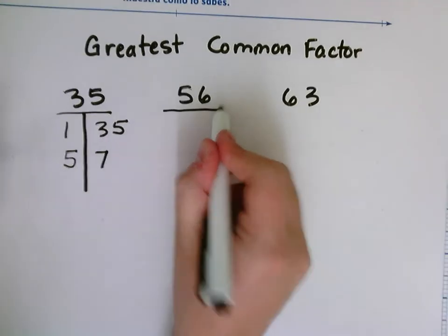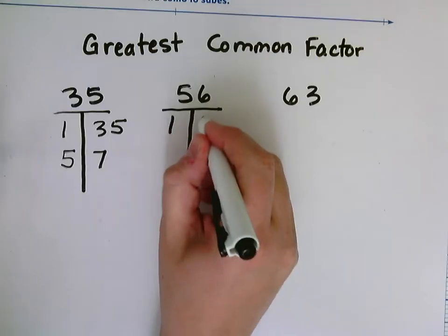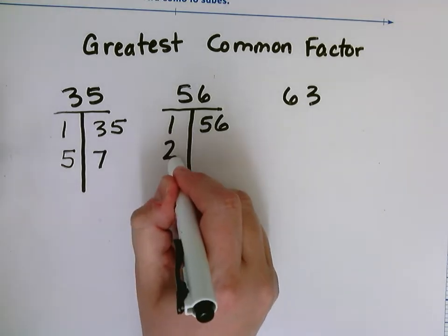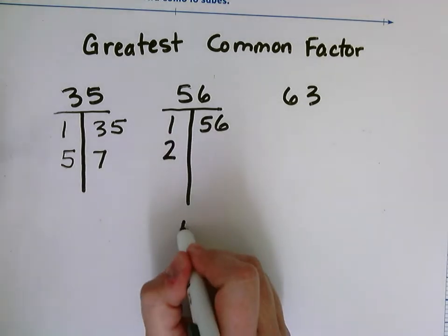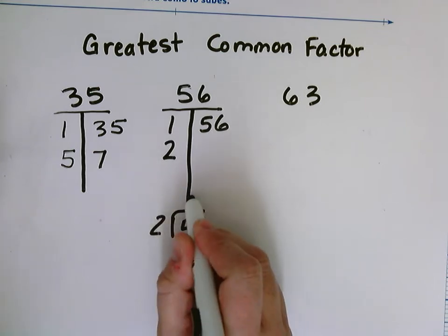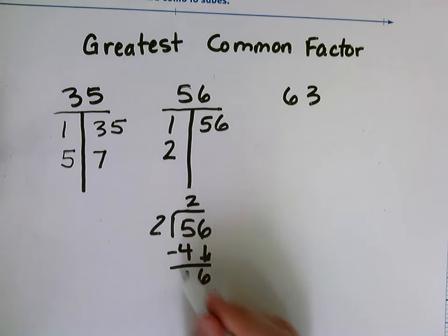Factors for 56 are a little bit more. We have 1 times 56. I know that 56 is an even number, so I know 2 is going to be a factor. So I can do 56 divided by 2, and I get 28.